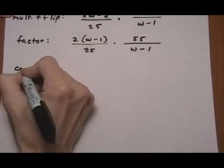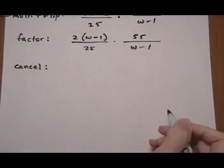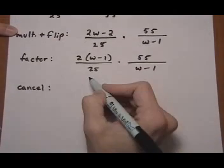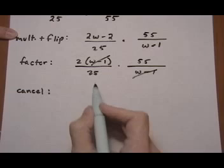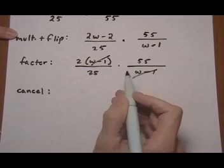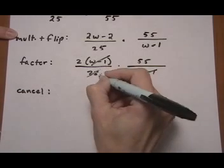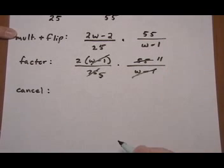And now we want to cancel. So canceling I can just do up here, w minus 1 top and bottom. 25 and 55 both divide by 5. So that will leave me 5 on the bottom and 11 on the top.